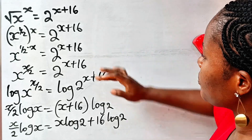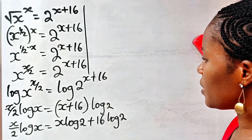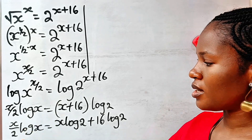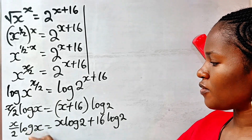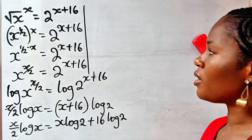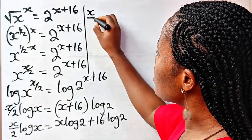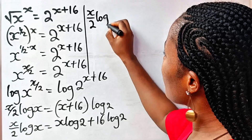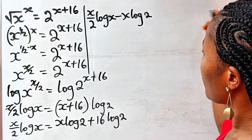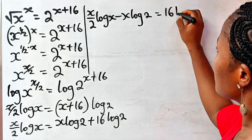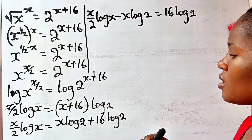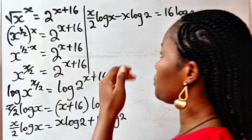Back to what we are doing. We have x over 2 log x. Let's transfer this x log 2 to this side. We subtract it because this is plus — so if it crosses the equation side it becomes minus. So here we have x over 2 log x minus x log 2 is equal to 16 log 2. That way we have brought everything concerning x to one side of the equation.